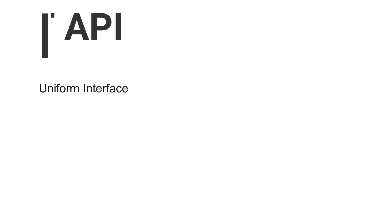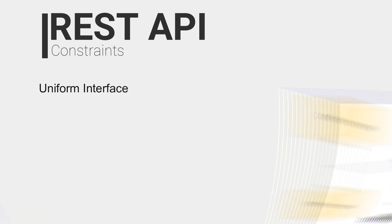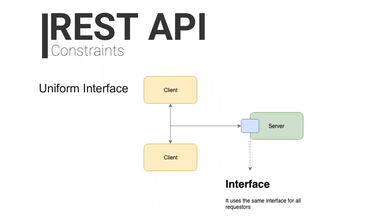Uniform Interface: applications and servers can be written in many different languages. Without an intermediary, any correspondence between a client and a server risks being poorly translated. So for the client and server to communicate effectively while also existing independently, they require a Uniform Interface. A Uniform Interface facilitates the decoupling of client and server by providing a standardized language recognized by both components regardless of their backend infrastructure. Typically, the standard protocol used by REST APIs is HTTP.